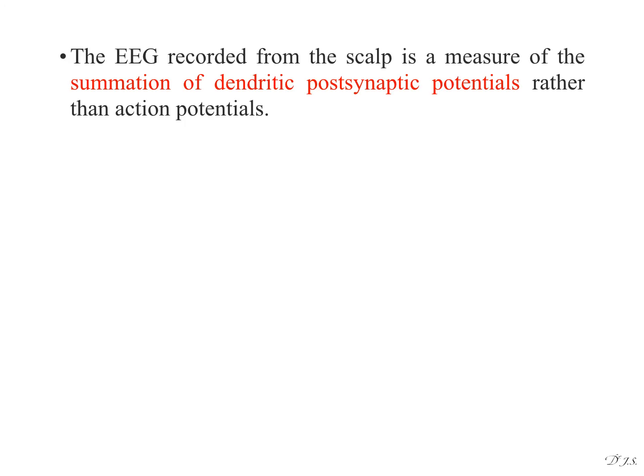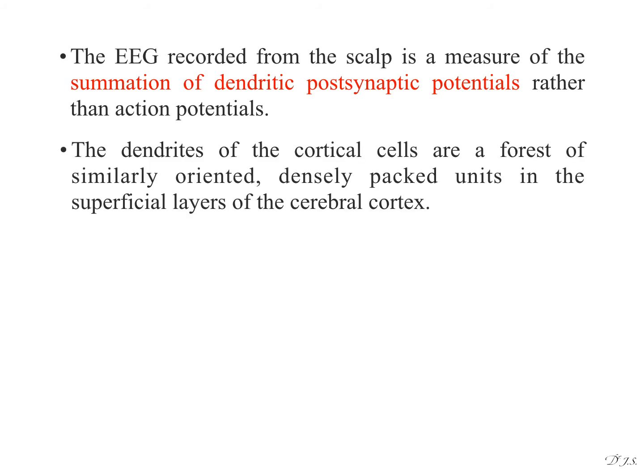The EEG recorded from the scalp is a measure of the summation of dendritic postsynaptic potentials rather than action potentials. The dendrites of the cortical cells are a forest of similarly oriented, densely packed units in the superficial layers of the cerebral cortex.